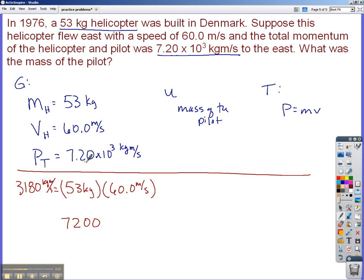So 7,200 kilogram meters per second, which was the total momentum, minus the momentum due to the helicopter's mass, 3,180 kilogram meters per second. And that tells me that the momentum due to the pilot was 4,020 kilogram meters per second.